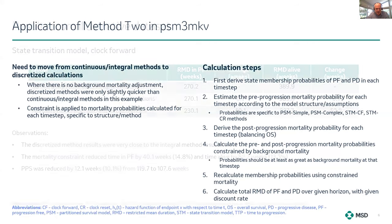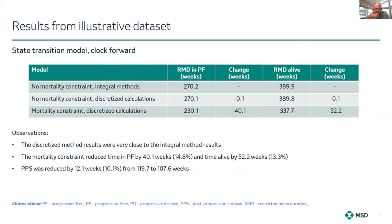Let's look at some results. This is an illustrative dataset with an illustrative life table, applying the constraint. This is a state transition model, clock forward. Using the integral methods without a mortality constraint, the illustrative dataset produces estimates of 270 weeks in progression-free and 399 weeks alive. Using the discretized calculations doesn't change the results too much, reducing the estimate by less than one day.